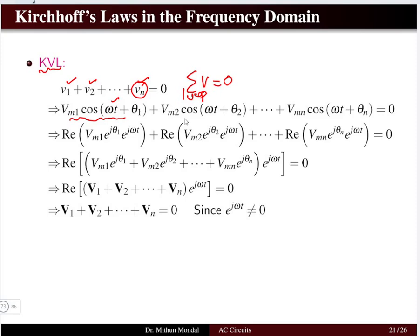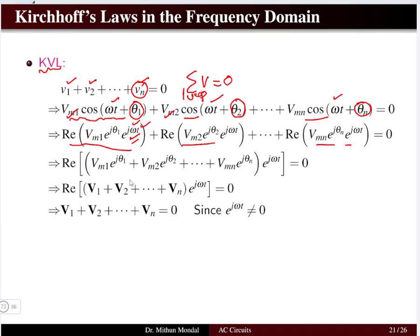The frequency of each of the voltage drops will remain the same. However, there may be a difference between the maximum amplitude and the phase angle. The phase angle may differ for voltage drops due to the presence of resistance, inductance, and capacitance in the circuit. We can represent the time domain quantities in the frequency domain with the incorporation of e to the power j omega t. If we do a little bit of mathematics to determine the quantities in phasor form, then we will see that the sum of voltages in phasor format also sums to zero.